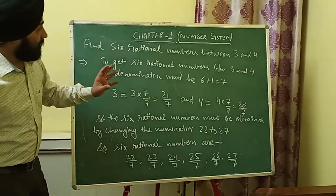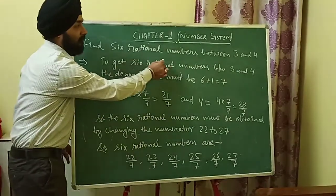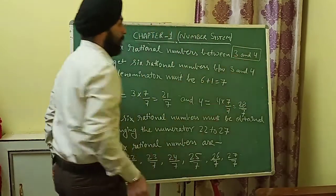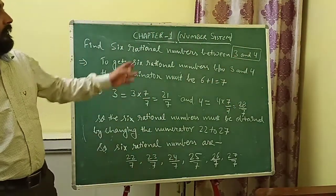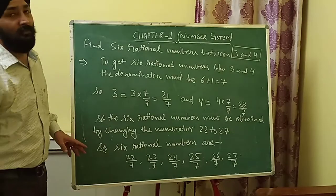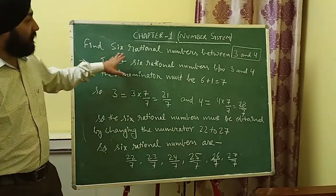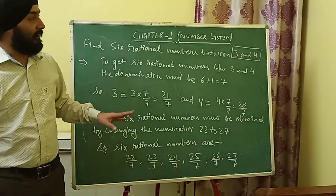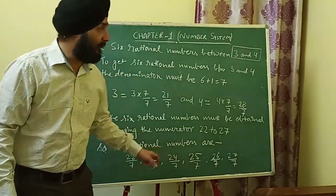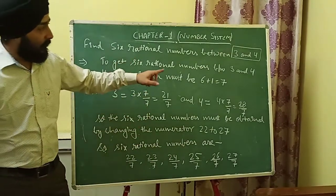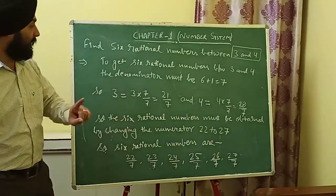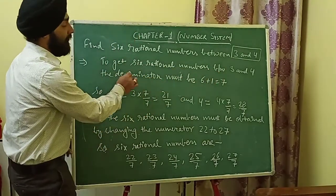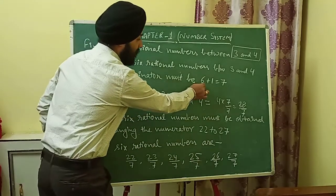Next question: find six rational numbers between 3 and 4. We have the numbers 3 and 4. We have to find six rational numbers between them. First, check if the denominators are the same — yes, the denominator of both 3 and 4 is 1, so they are the same.